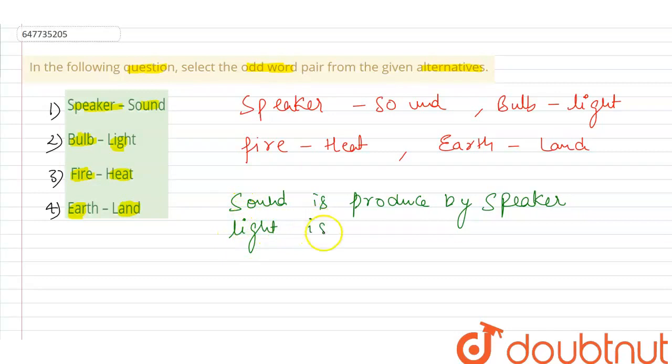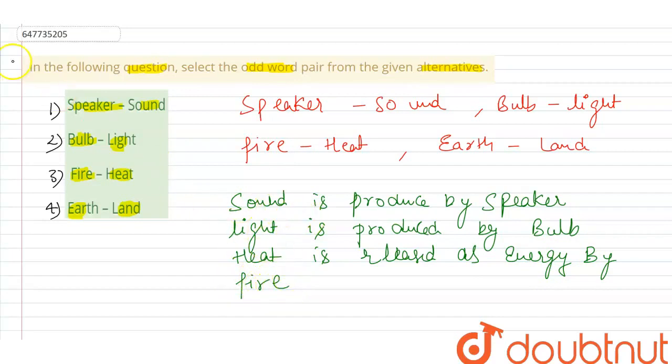Light is produced by bulb. And fire produces heat as energy, so the heat is released as energy by fire. These three are similar: sound produced by speaker, light produced by bulb, heat as energy released by fire.